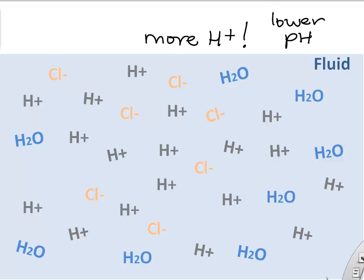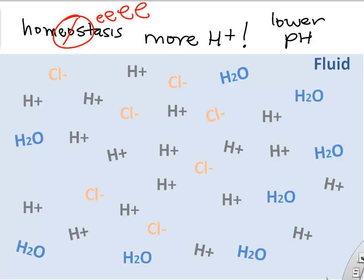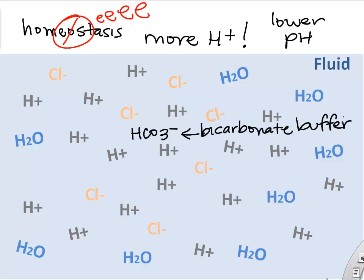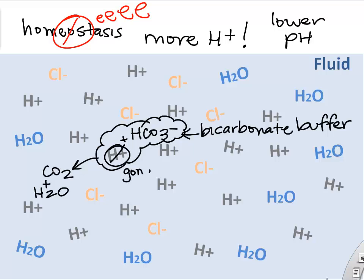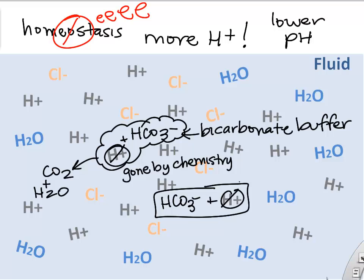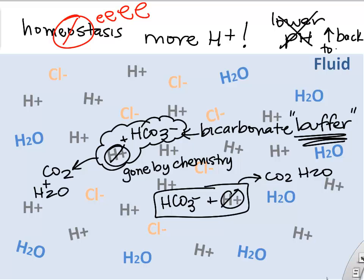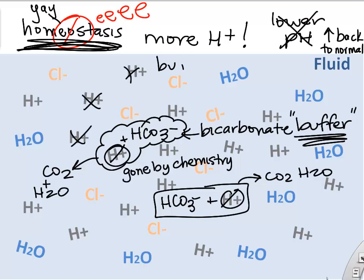If you have too many hydrogen ions, your body doesn't like that — that's not homeostasis. Luckily, our body has a chemical called bicarbonate (HCO₃⁻). Bicarbonate can bind chemically to hydrogen ions and basically make them disappear, becoming CO₂ and water. By getting rid of free hydrogens, bicarbonate acts as a buffer and prevents the pH from changing too much in our body.